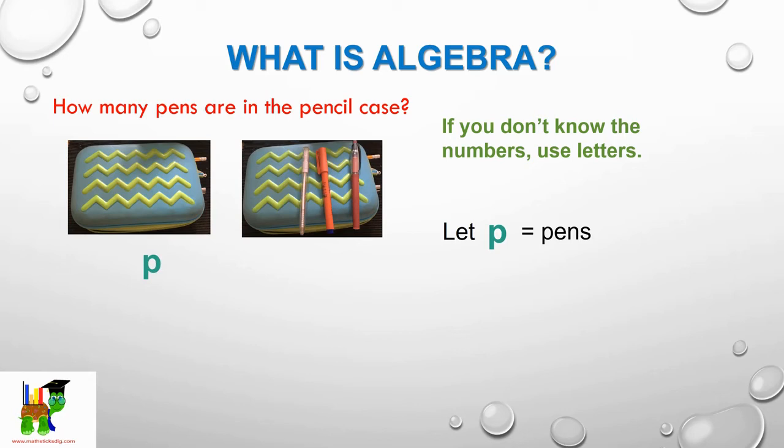And if I want to add three more pens to it, we write p + 3. That is our algebra. p stands for a number which we do not know. We call p and 3 as terms.